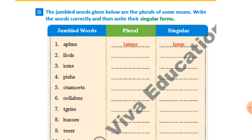Seventh one: T-I-G-E-R-S — the answer is 'tigers' and singular is 'tiger'. Eighth one: H-O-U-S-E-S — the answer is 'houses' and the singular noun is 'house'.